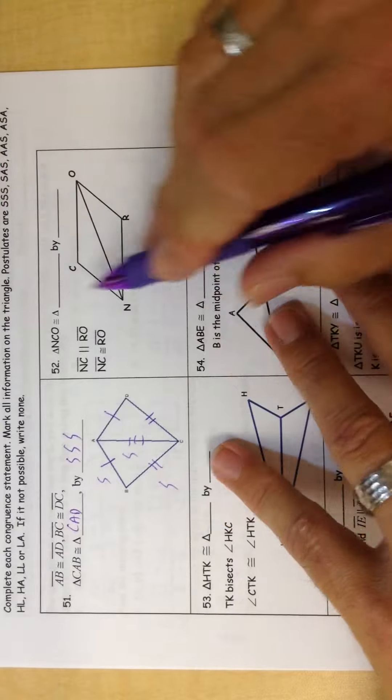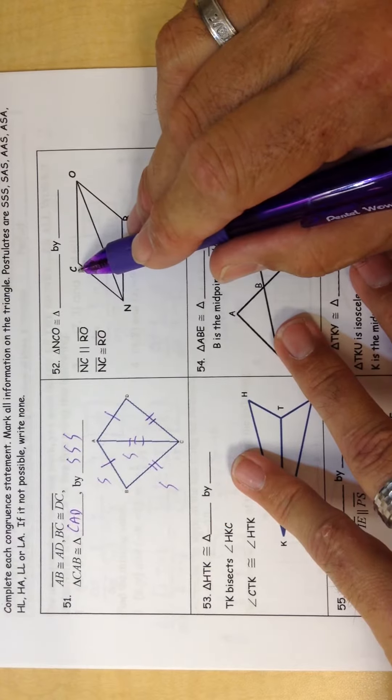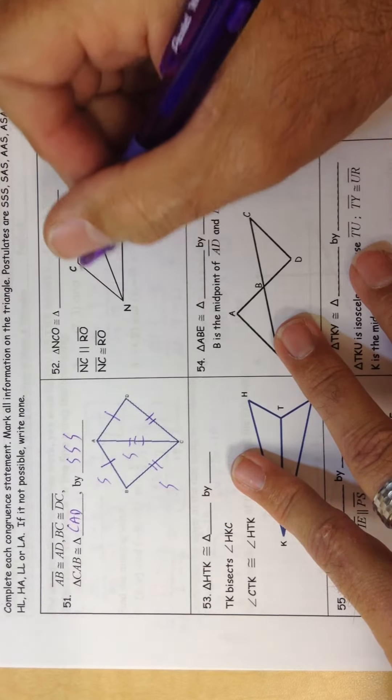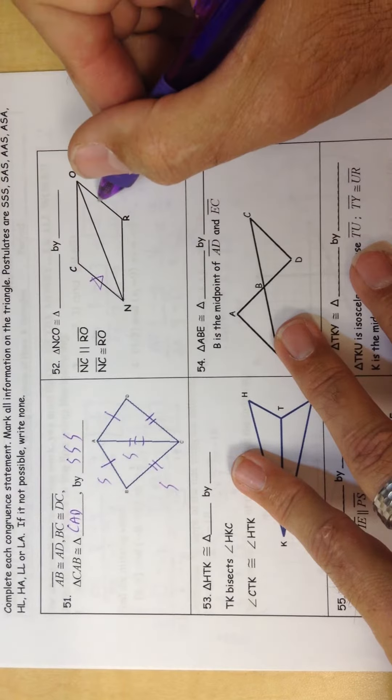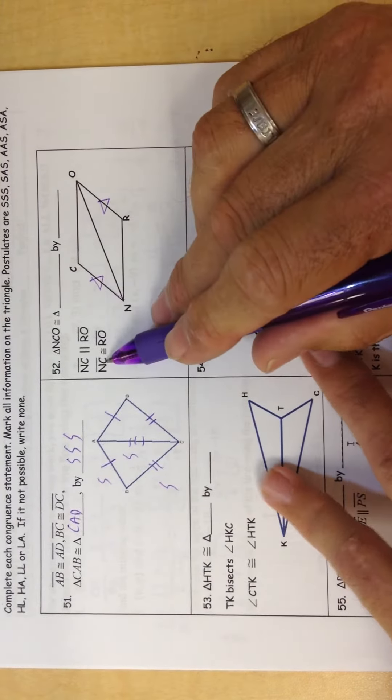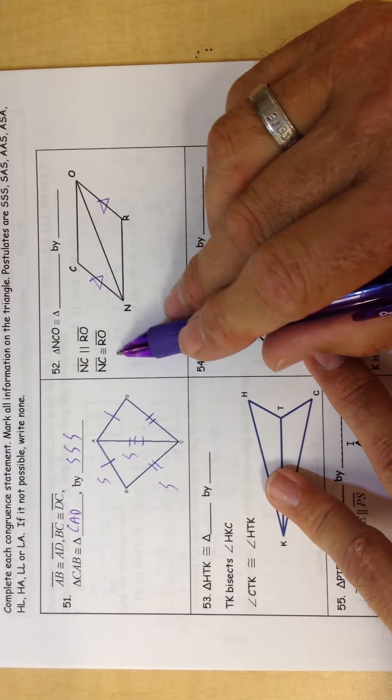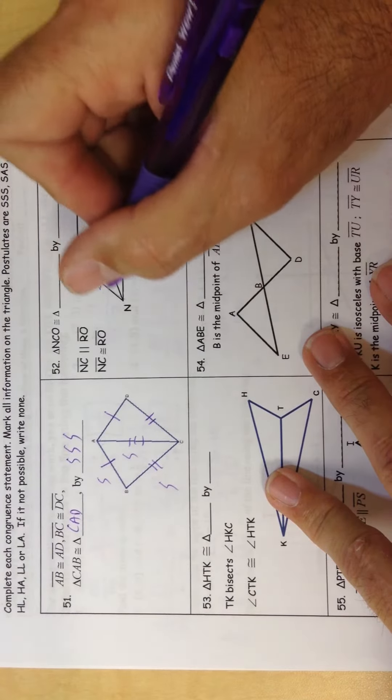Right here, NC is parallel to RO. That means NC is parallel marked with the triangles, and NC is equal to RO. So they're also equal.